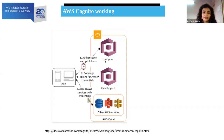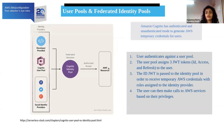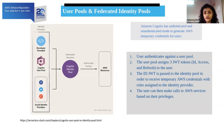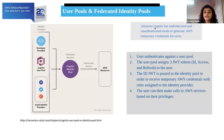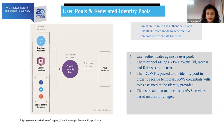Now you must be wondering what the possible misconfigurations are. To discuss that, I've summarized how Cognito works — how the user pool looks on the sign-up page, identity pool, and so on. Keep this key point in mind: Amazon Cognito has authenticated and unauthenticated modes to generate AWS credentials for users. I will be discussing how this can be helpful to us.